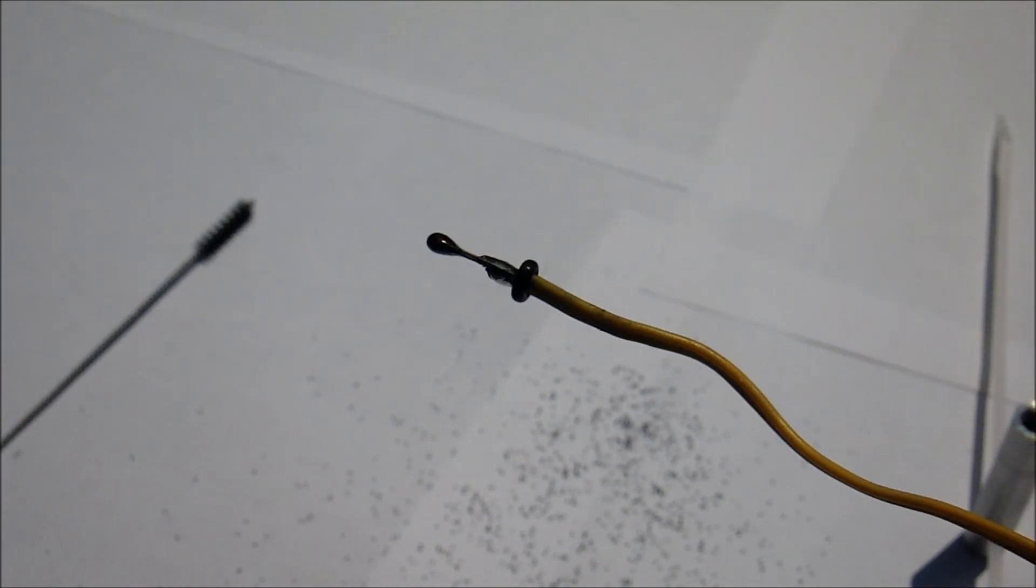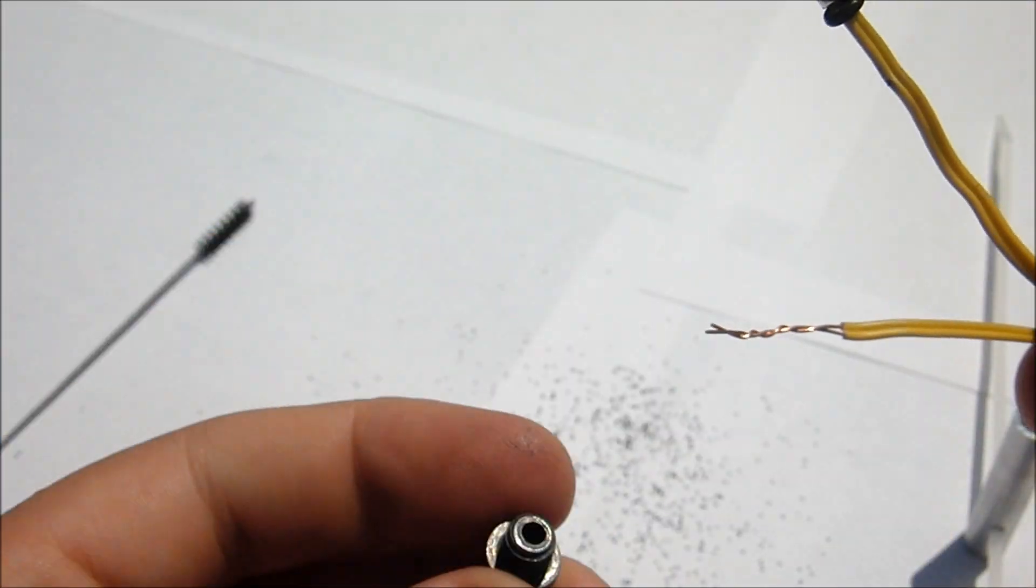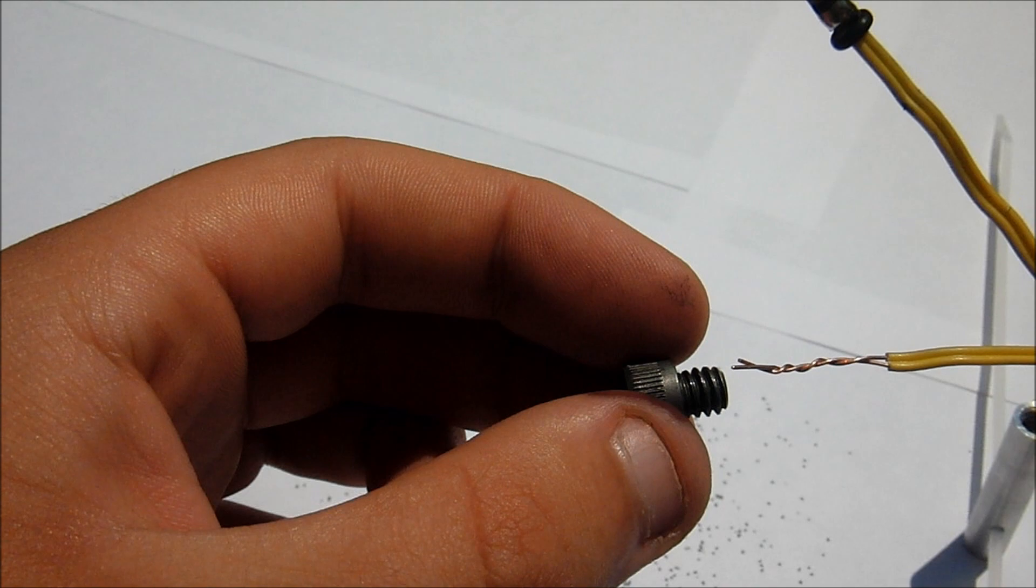And then once that's there, that's going to create a seal that goes around the wires and then will block up the hole in the screw.